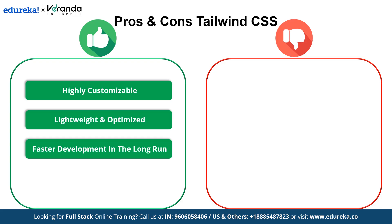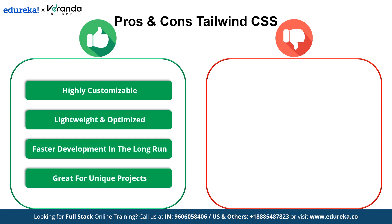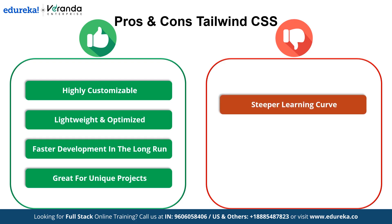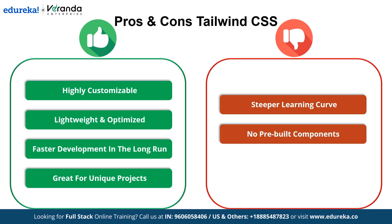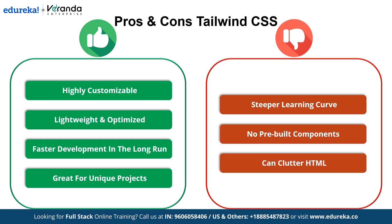Tailwind's pros include: it is highly customizable; it is lightweight and optimized since the JIT compiler removes unused CSS; it enables faster development in the long run once you master the utility classes; and it's great for unique projects with custom UIs and creative designs. The cons are: it has a steeper learning curve as it takes time to get used to utility classes; there are no pre-built components so everything has to be styled manually; and with too many utility classes it can clutter the HTML, making code harder to read.